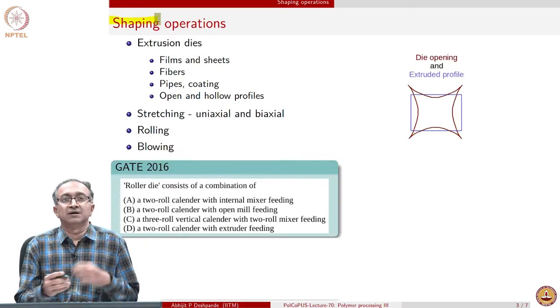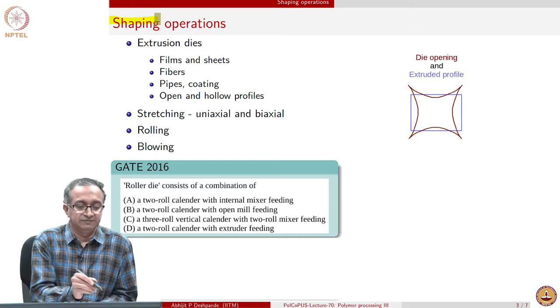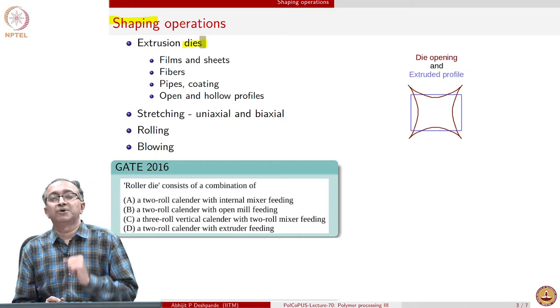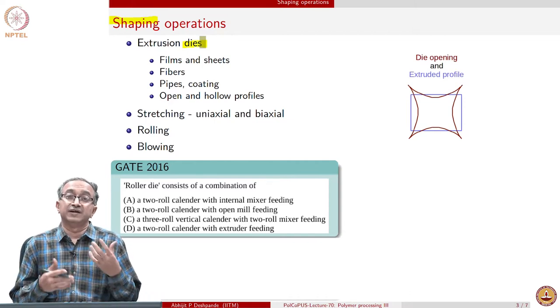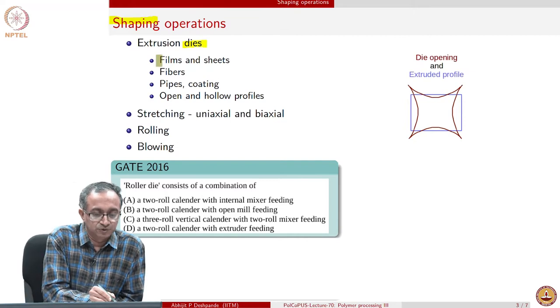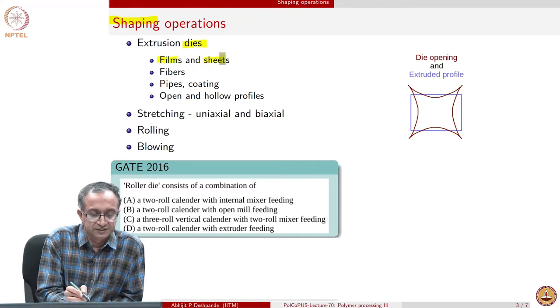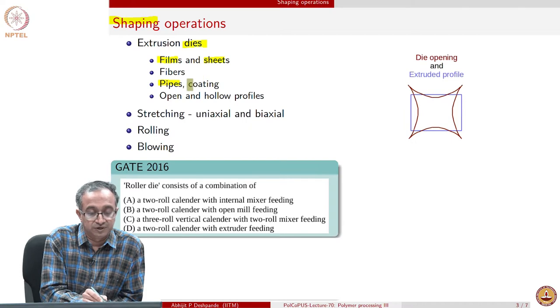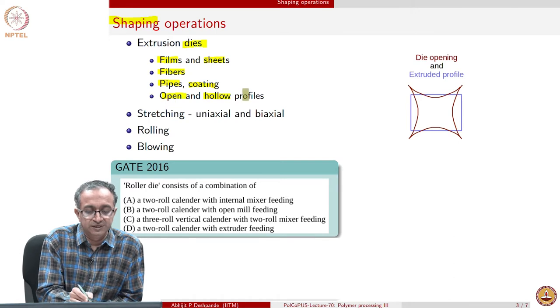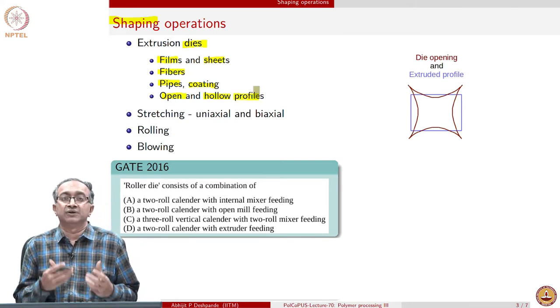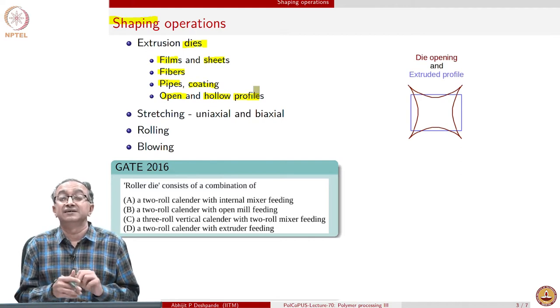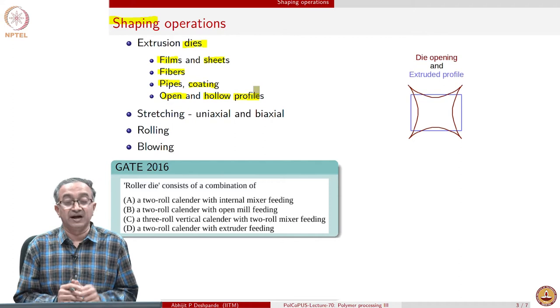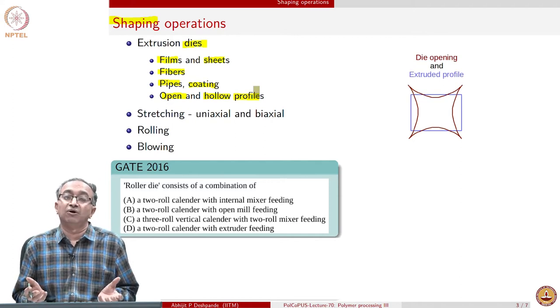The shaping operations are of different class. We have basically dies through which a polymer melt or a polymeric resin plus fiber mixture is extruded. This could be to make films or sheets, it could be to make pipes or it could be to do wire coating or to make fibers. It could also be in case of pultrusion or in case of making other objects like C sections or I-beams. We can have either open profiles or hollow profiles.